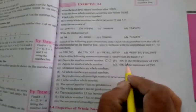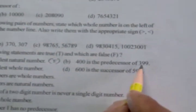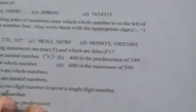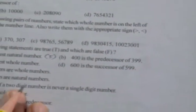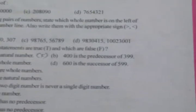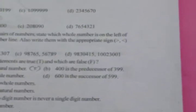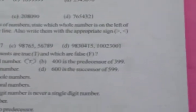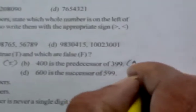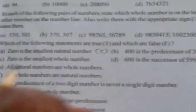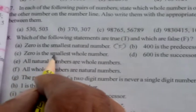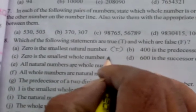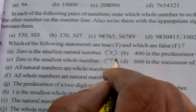Statement B: 400 is the predecessor of 399. Predecessor means before, not after. So this is also false. Statement C: 0 is the smallest whole number. Yes, it is true — 0 is the smallest whole number.